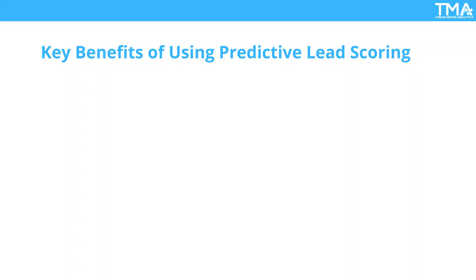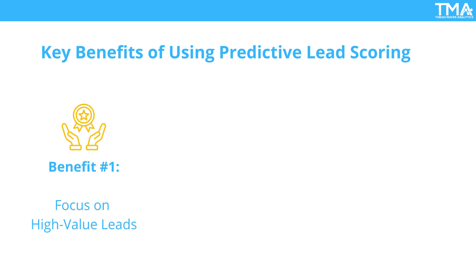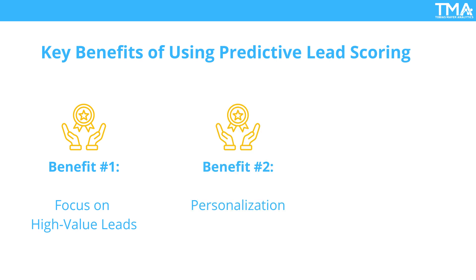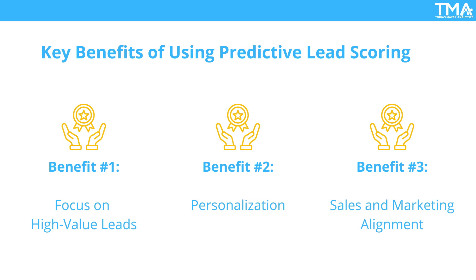Let's break down the key benefits of using predictive lead scoring in your sales strategy. Benefit number one: focus on high value leads. By prioritizing high scoring leads, your sales team can focus their time and energy where it matters most — leading to higher conversion rates and less time wasted on cold or unqualified leads. Benefit number two: personalization. Predictive lead scoring enables better personalization by helping you tailor your outreach and messaging to address specific needs and pain points. Benefit number three: sales and marketing alignment. Predictive lead scoring helps align your sales and marketing teams, so marketing can focus on generating leads that match the ideal customer profile while sales concentrates on converting the highest scoring leads.